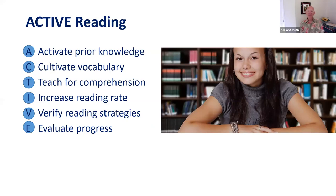Let's present the framework. There are six core principles, and I use the word ACTIVE to remind me of them. The A reminds me to activate prior knowledge. C: cultivate vocabulary. T: teach for comprehension. I: increase reading rate. V: verify strategies. E: evaluate progress. The acronym ACTIVE serves as a simple mnemonic device to help you remember the six key verbs — activate, cultivate, teach, increase, verify, and evaluate — and the nouns that go with those verbs.